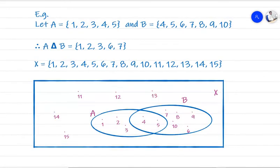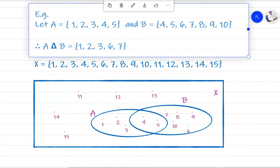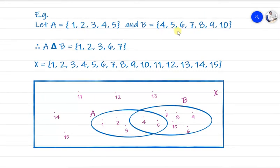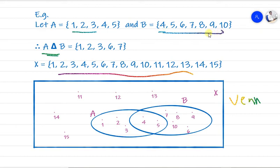Now let's see an example. Set A contains {1, 2, 3, 4, 5} and set B contains {4, 5, 6, 7, 8, 9, 10}. We also have a universal set X containing all elements. We have to find the symmetric difference of A and B. We consider elements from A and from B, but we skip elements common to both — which are 4 and 5.